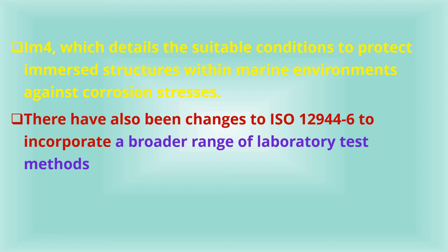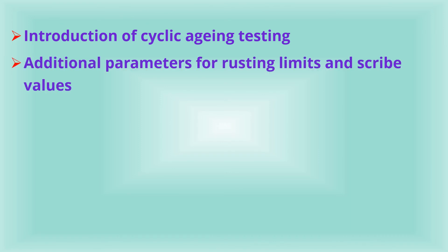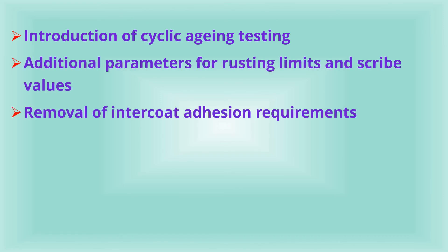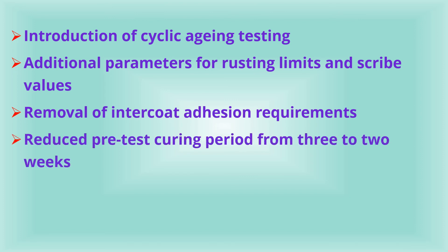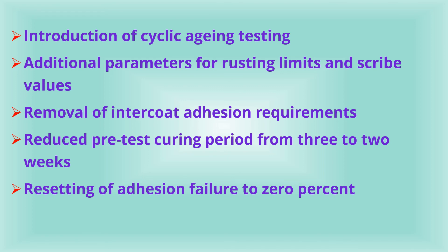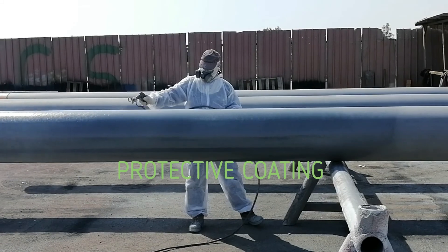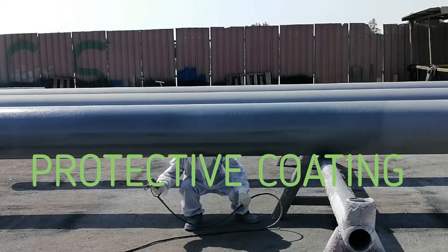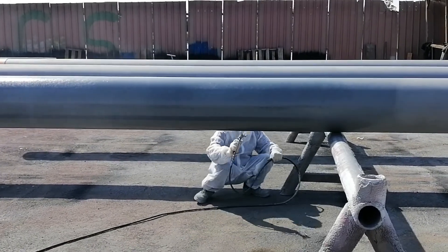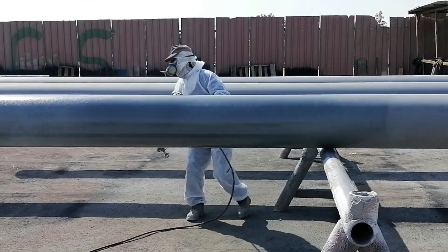The 25-plus year durability classification corresponds with the new immersion category IM4, which details suitable conditions to protect immersed structures within marine environments against corrosion stresses. There have also been changes to ISO 12944-6 to incorporate a broader range of laboratory test methods, all of which must be adhered to in order to comply with the new corrosivity categories. These include: introduction of cyclic aging testing, additional parameters for rusting limits and scribe values, removal of intercoat adhesion requirements, reduced pre-test curing period from three to two weeks.